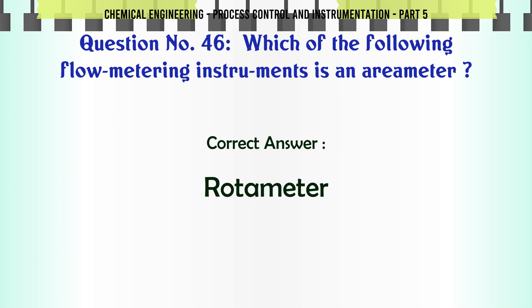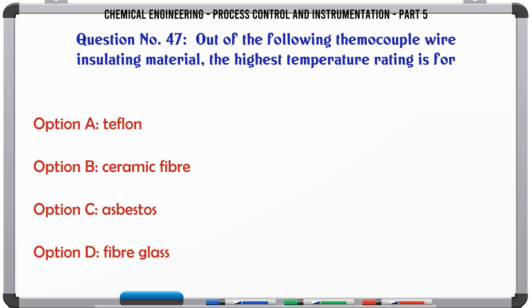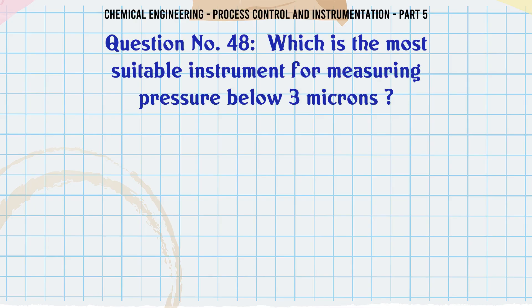Out of the following thermocouple wire insulating material, the highest temperature rating is for: A. Teflon. B. Ceramic fiber. C. Asbestos. D. Fiberglass. The correct answer is Ceramic fiber.